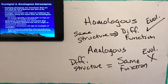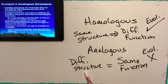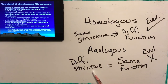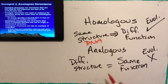Analogous structures are not evidence of evolution. Take a bird's wing and a butterfly wing - the function is the same, flight, but the structures are very different. A bird's wing has bones, musculature, nerves, and feathers. A butterfly wing is very thin and filamentous with tiny colored scales. The structures don't look alike at all; they have very different genetic codes, so they don't support a relationship to a common ancestor.